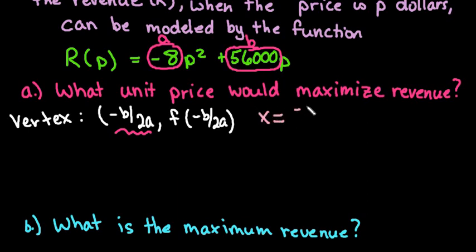So our B term would be negative 56,000 divided by 2 times negative 8. And when we simplify this we do end up with $3,500. So that is the price of whatever particular product we are talking about right here.